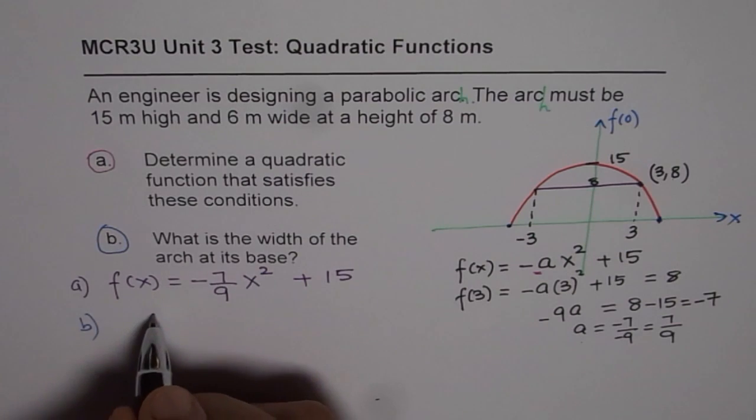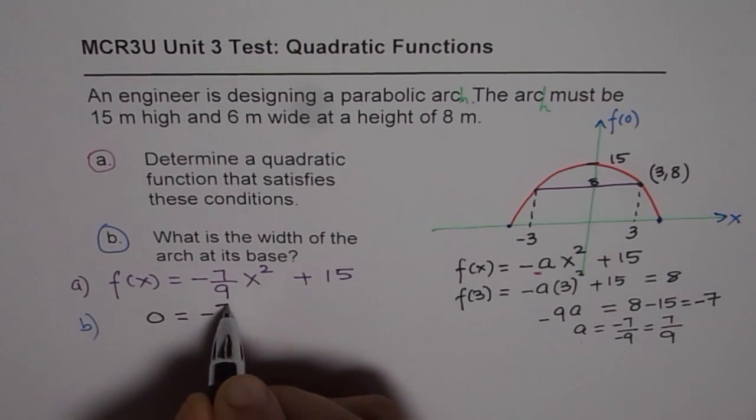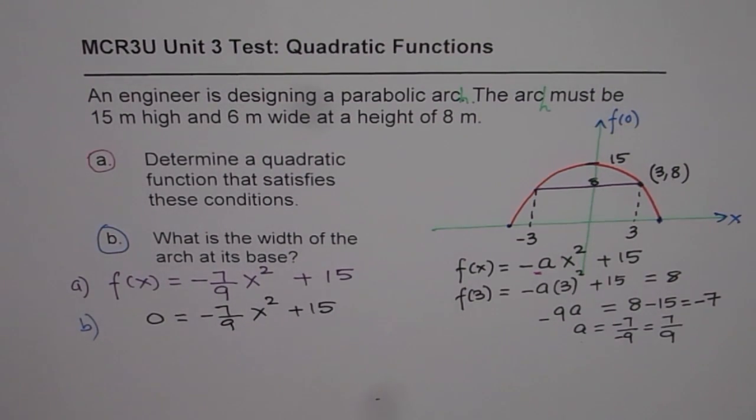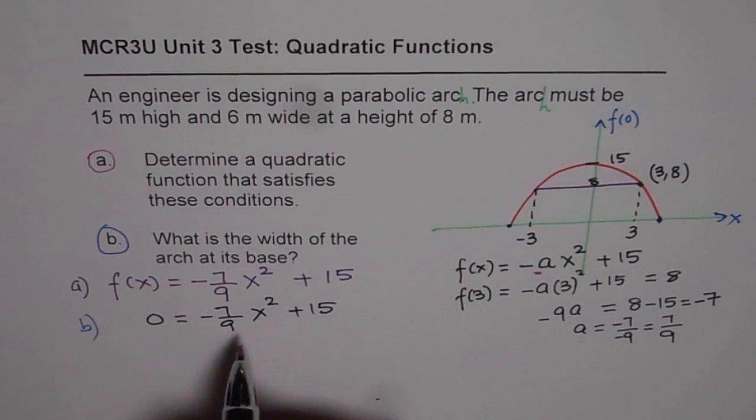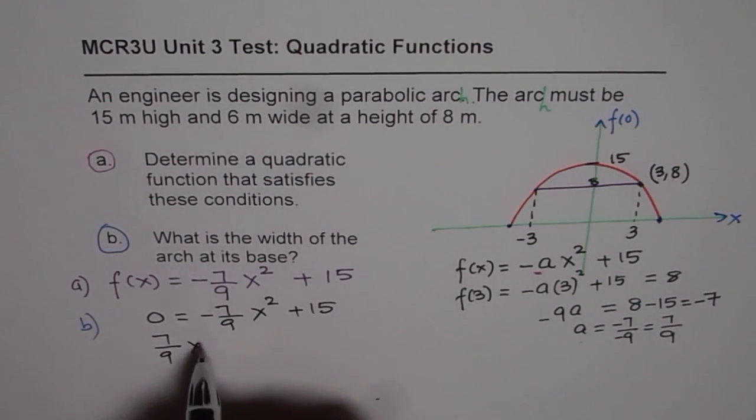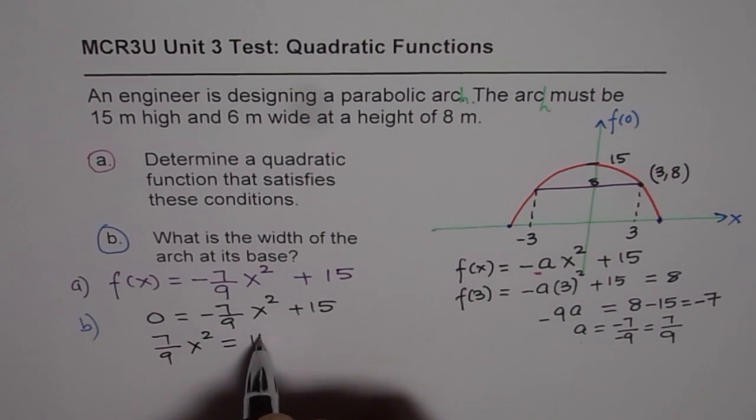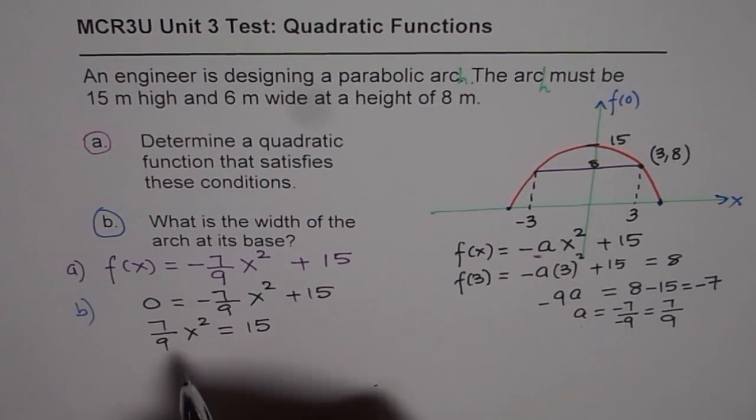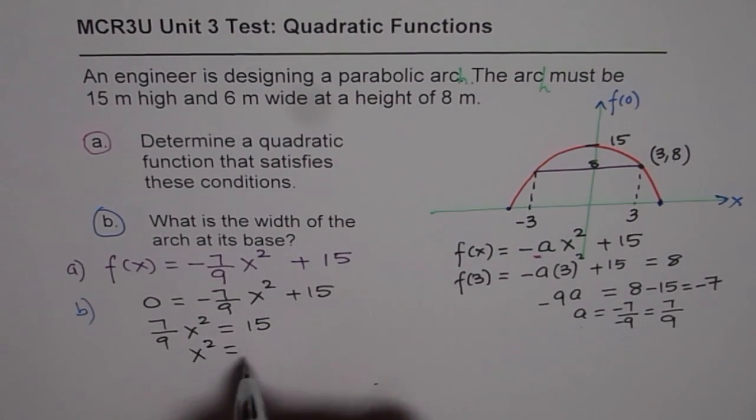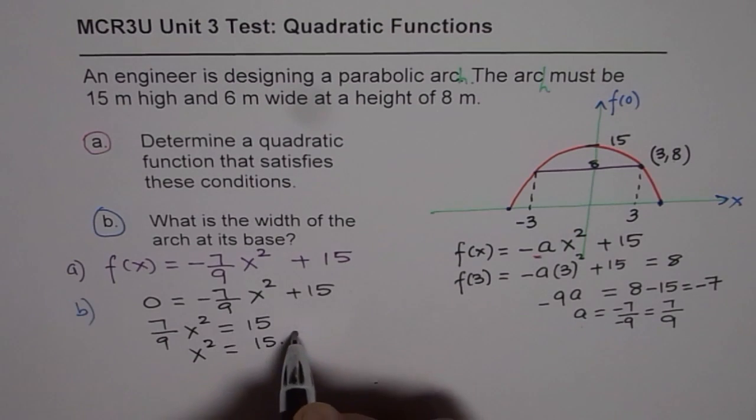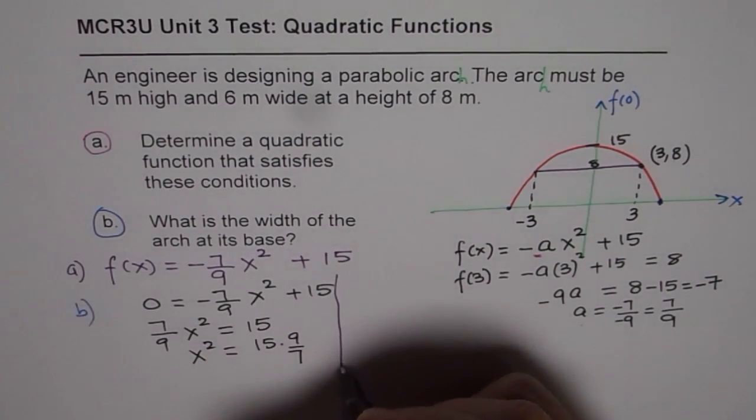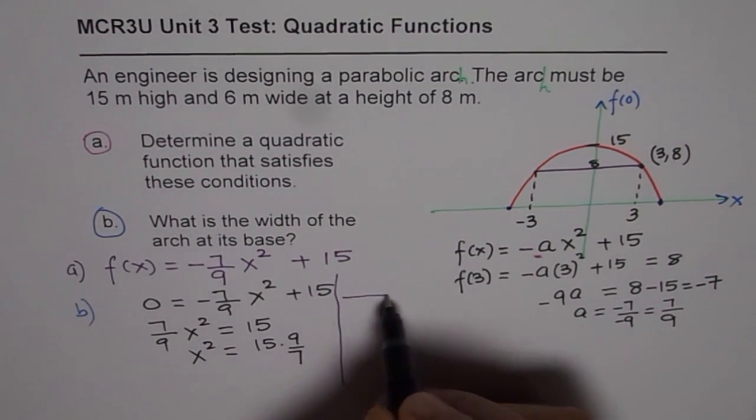So we will write f(x) as 0 = -7/9 x² + 15 and solve. So we can solve from here. We can say 7/9 x² = 15, and therefore x will be equal to, let me push the page a bit. So we can say x² = 15 × 9/7.